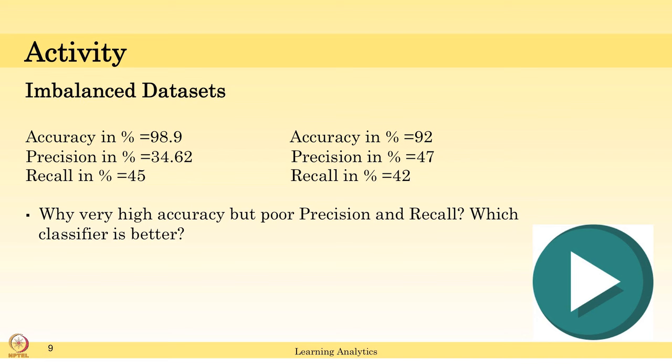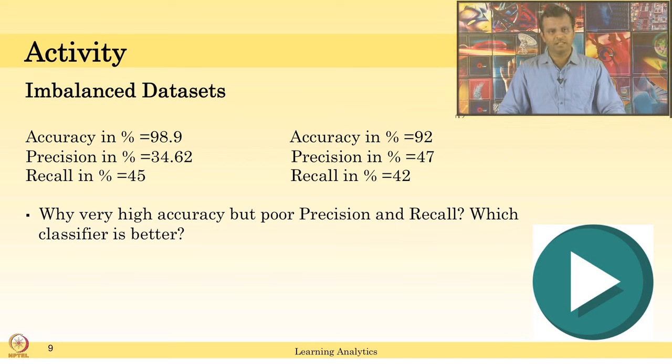Consider you have two classifiers. The results are not same as what we discussed in the last slide, this is a bit different. Consider there are two classifiers which use the same 1000 data set and which gave results like this: accuracy in percentage 98.9 percent and precision 34, recall 45 percent. Classifier 1, classifier 2 results on the same data set is given.